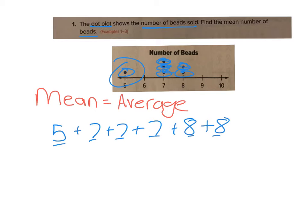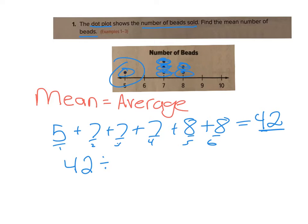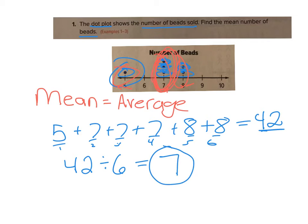Using a calculator would be okay here. You're going to add up all of these numbers: five plus seven plus seven plus seven plus eight plus eight, and that equals 42. Now that's the total, but if I want the average I have to count how many I had — one, two, three, four, five, six. There were six points, so I take my total of 42 and divide it by six, and I get seven. That makes sense — you have one that's a five, a few that are seven, a couple that are eight, so the average being about seven makes sense.